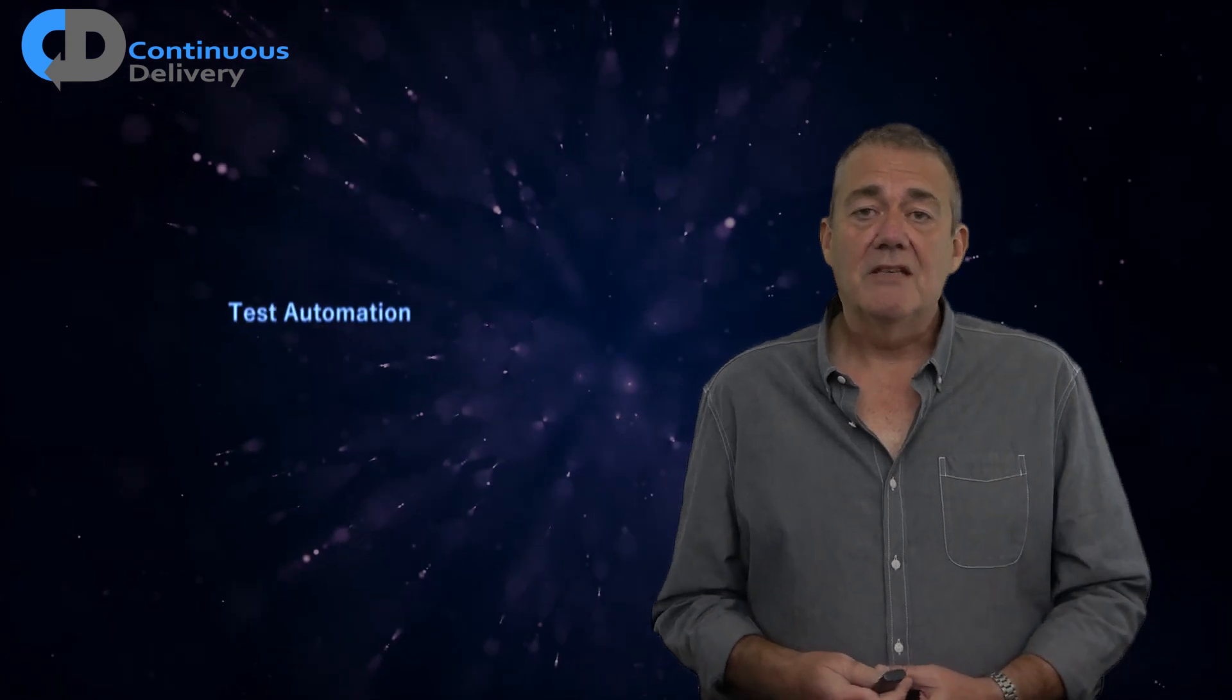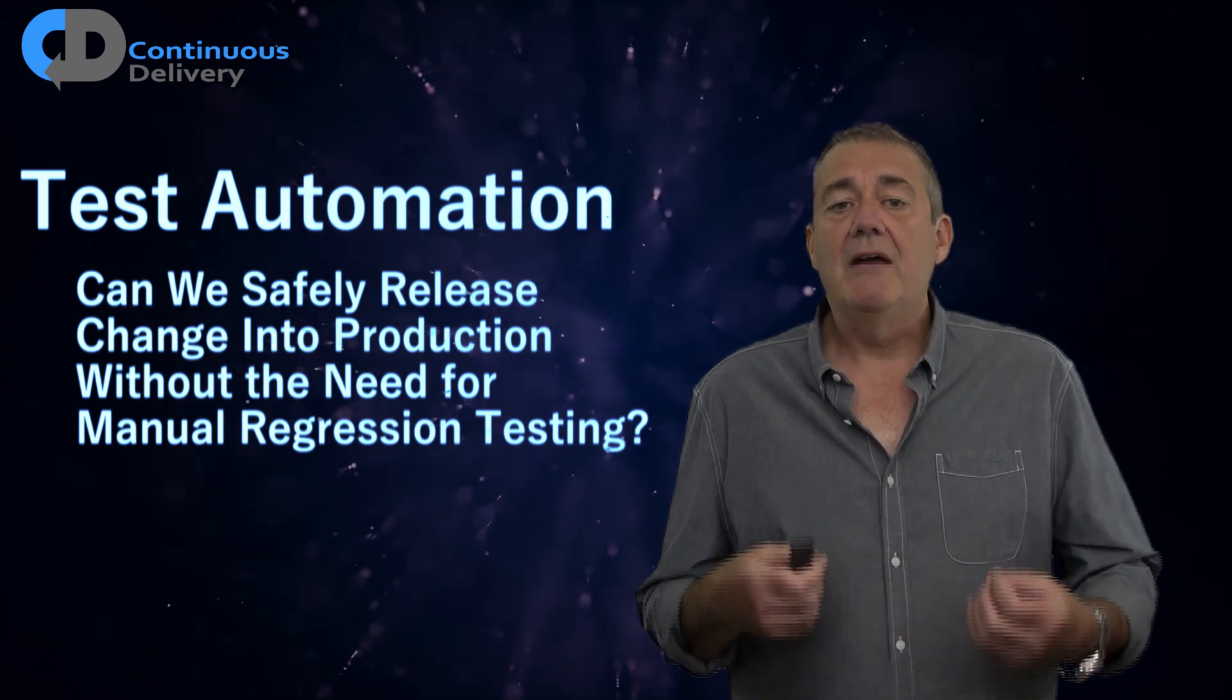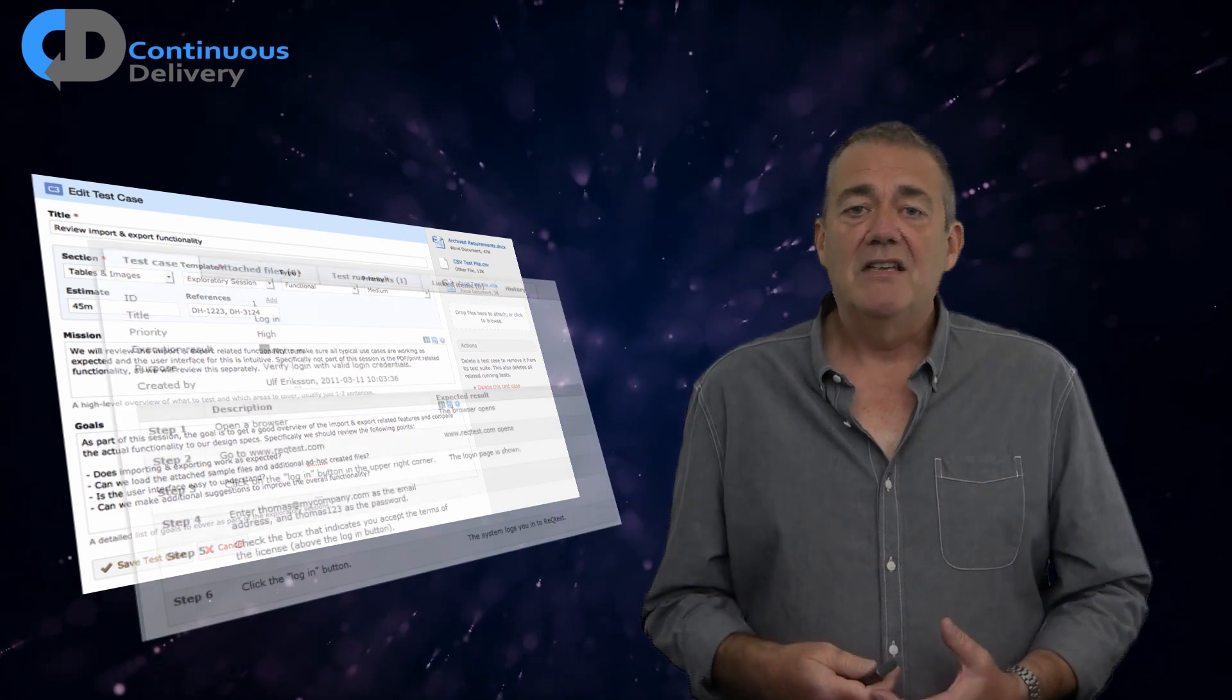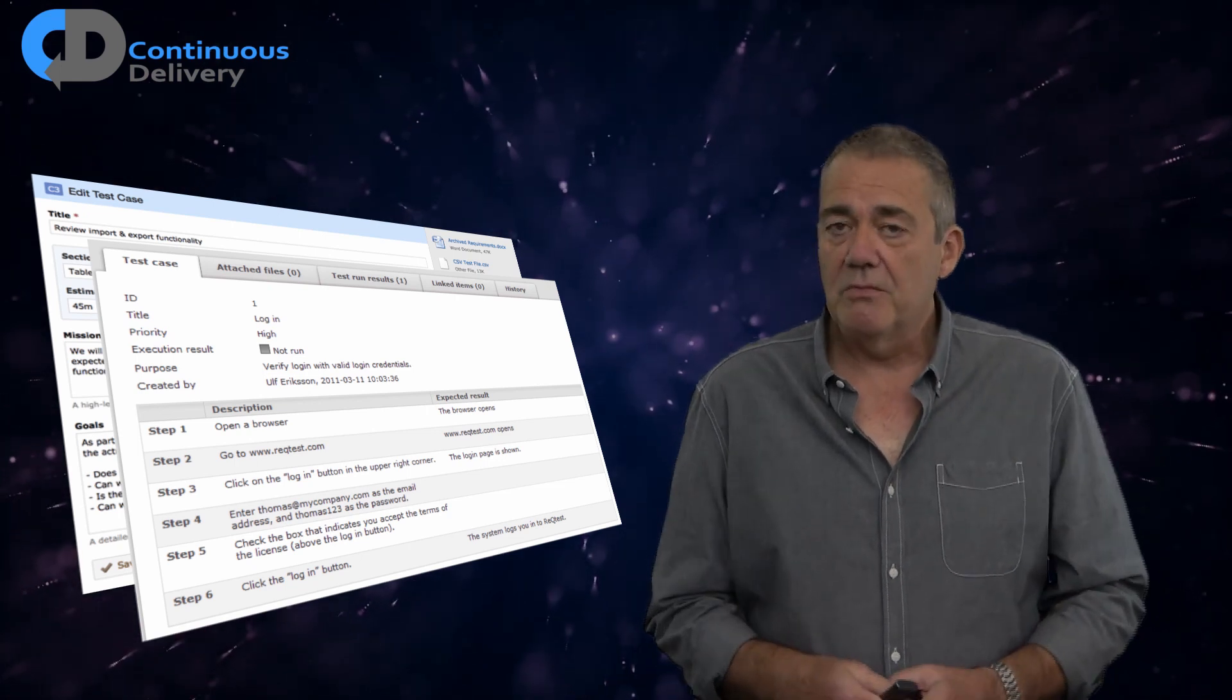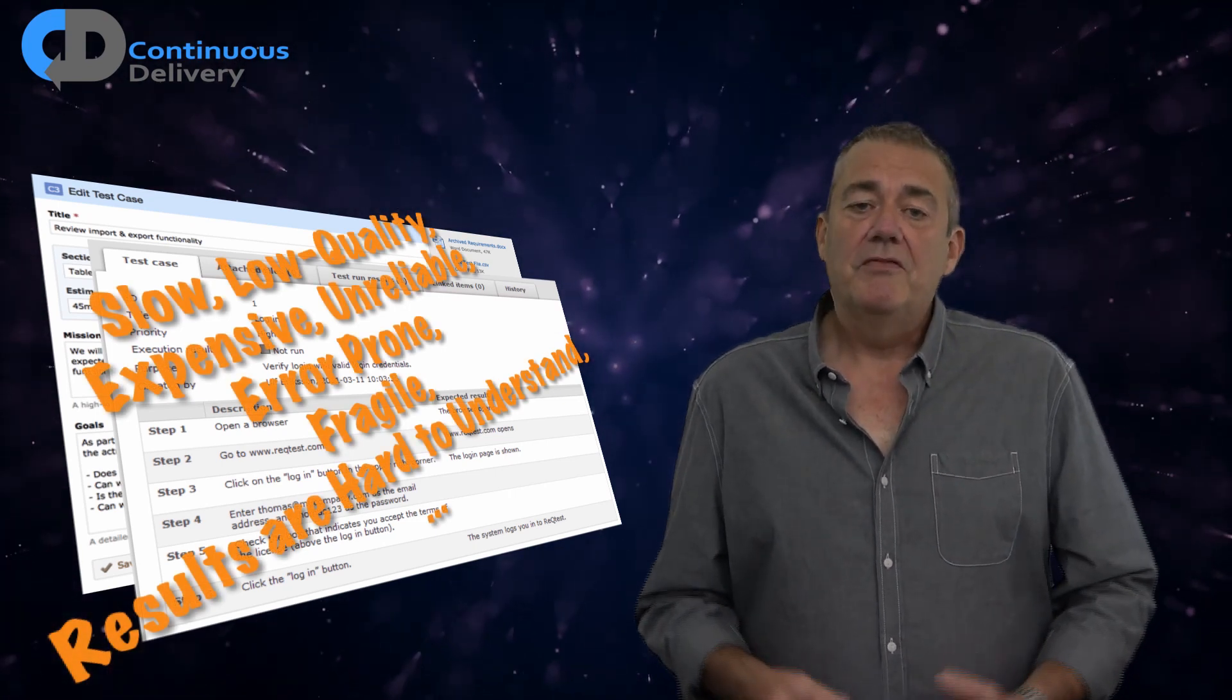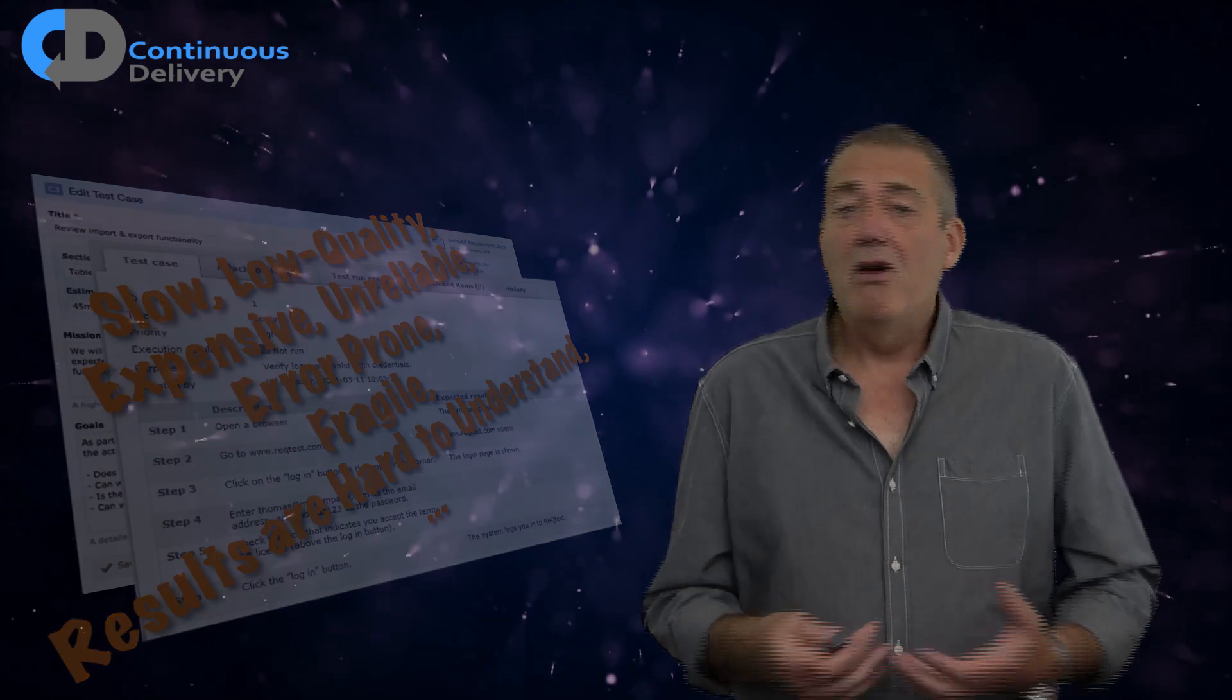One, test automation. Can we safely release change into production without the need for manual regression testing? Many organizations use descriptions of tests like this: effectively a script that a human being is forced to follow as though they're some kind of testing robot. This is slow, it's low quality, expensive, unreliable, error-prone, fragile. It results in hard to understand test cases. This is not a high-quality process, but it's probably one of the most common approaches.